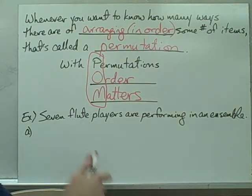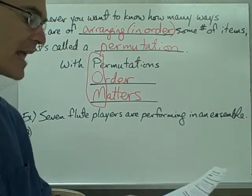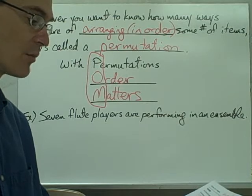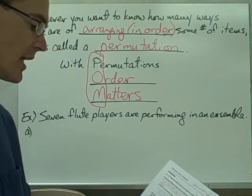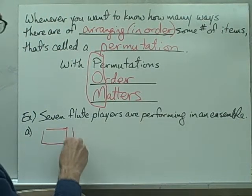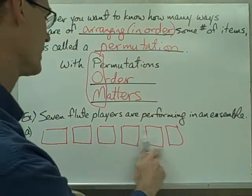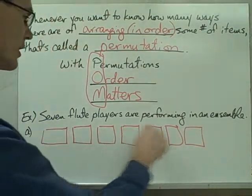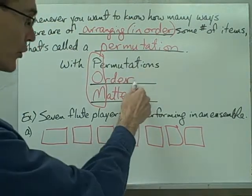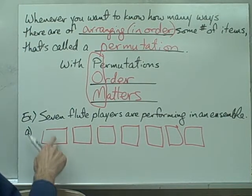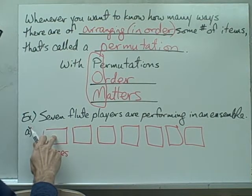There's one more example: seven flute players are performing in an ensemble. Part A says the names of all seven players are listed in the program in random order. How many different ways could the players' names be listed — that is, how many different ways could they be arranged in the program? I draw my boxes: one, two, three, four, five, six, seven boxes — one for each of the flute players. I want to know how many different ways there are to arrange in order these players' names. The name that goes in this first slot — how many different choices do I have? Seven choices, because I have seven flute players.